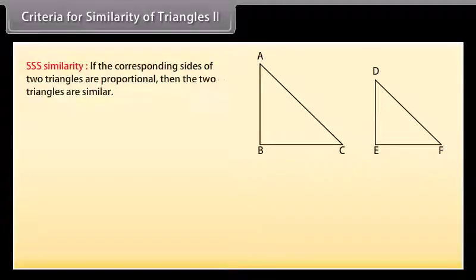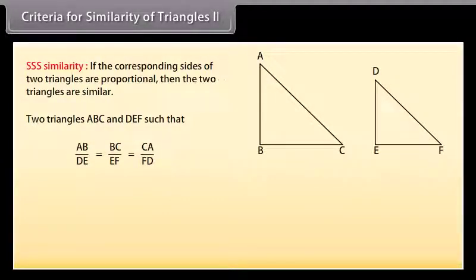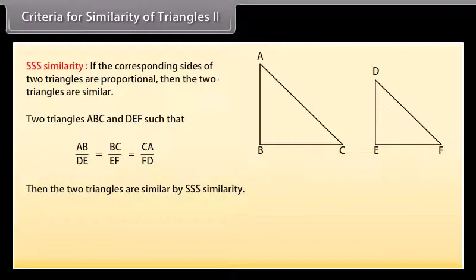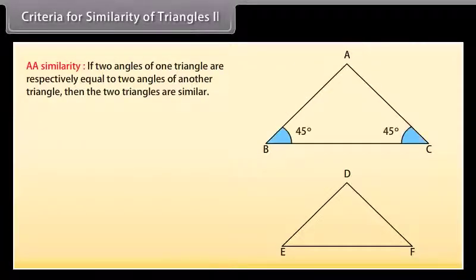Criteria for similarity of triangles — SSS similarity: if the corresponding sides of two triangles are proportional, then the two triangles are similar. Two triangles ABC and DEF such that AB upon DE equals BC upon EF equals CA upon FD are similar by SSS similarity. AAA similarity: if two triangles are equiangular — all three angles equal to each other — then they are similar. AA similarity: if two angles of one triangle are respectively equal to two angles of another triangle, then the two triangles are similar.